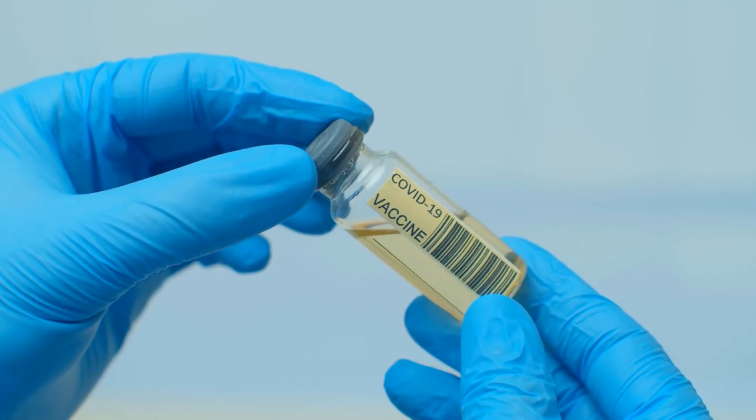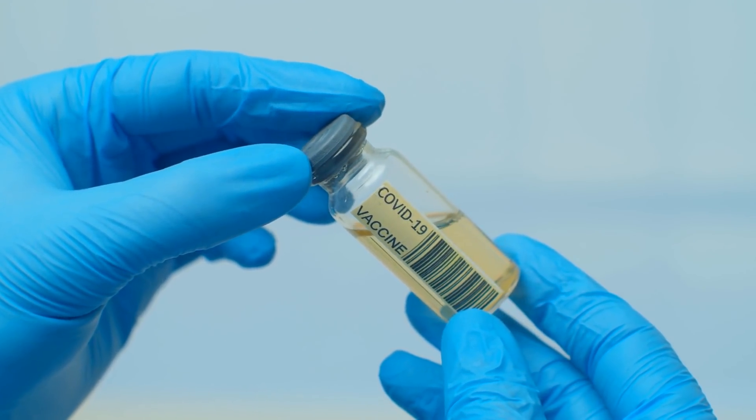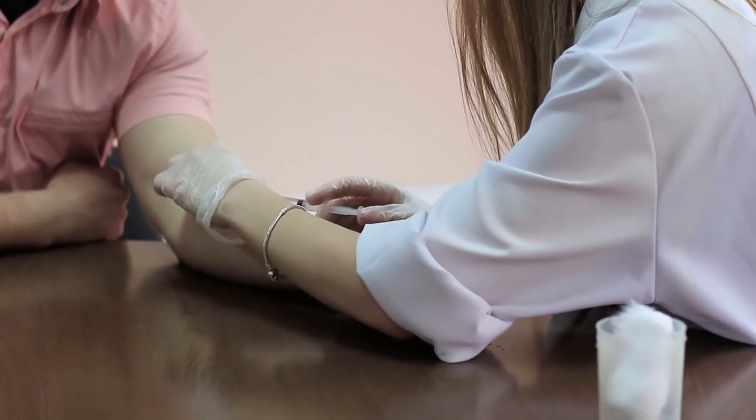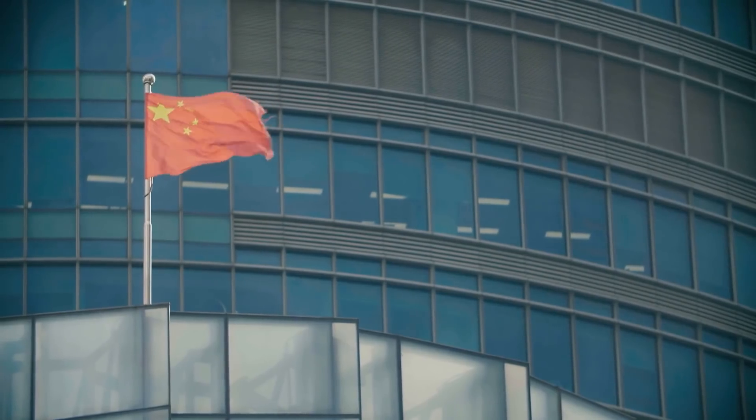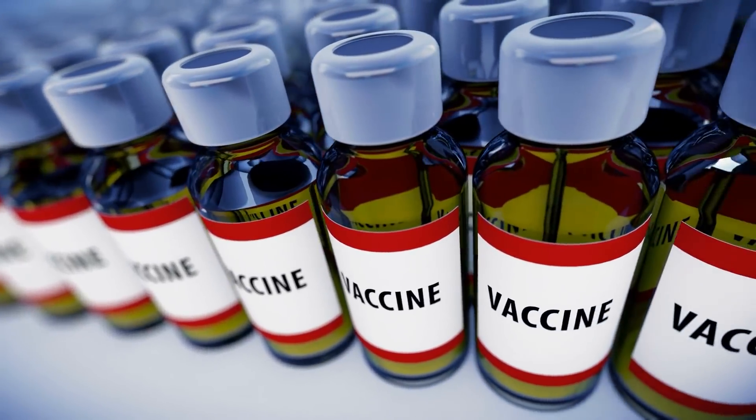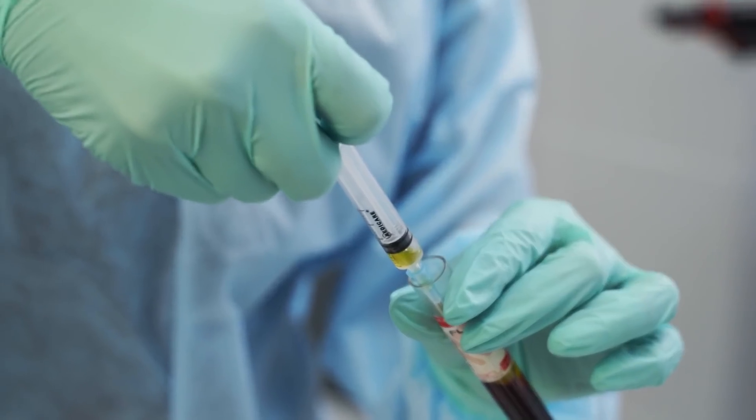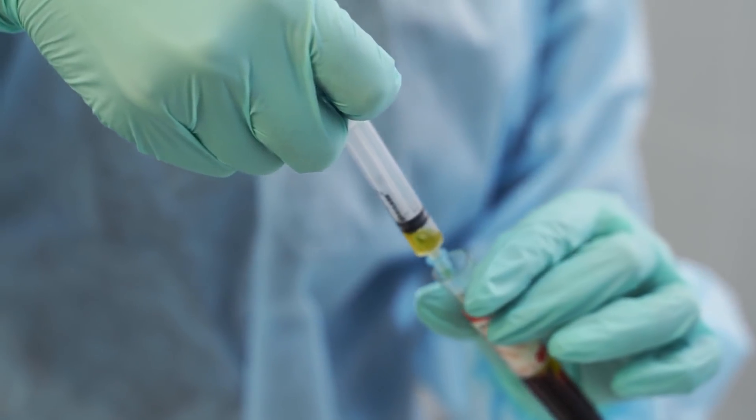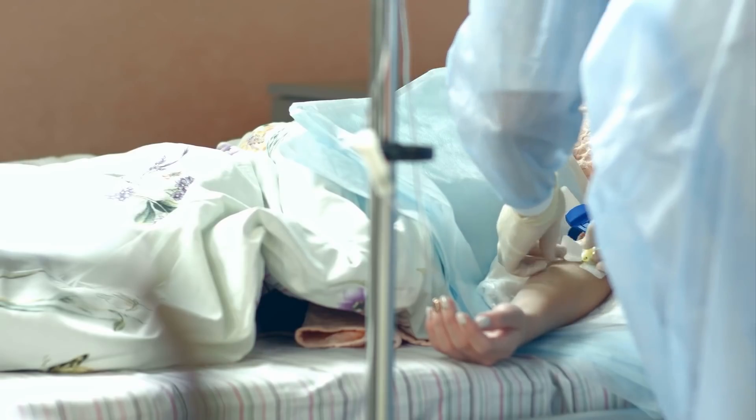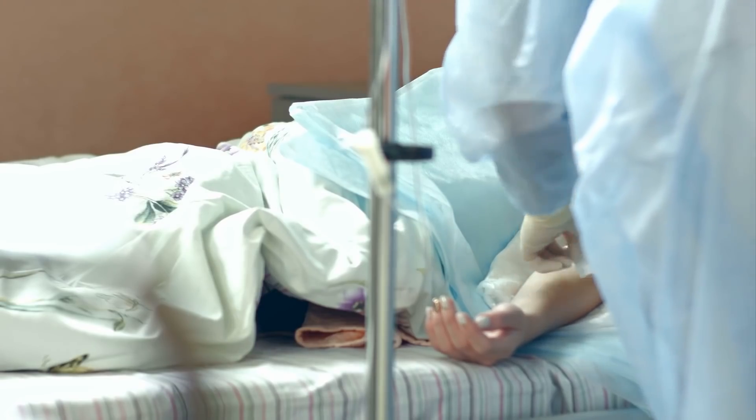Chinese health officials have said that the country currently has five potential coronavirus vaccines at the human trial stage. China's president has even promised to share any vaccine they develop with the rest of the world. Hundreds of patients in China have also received plasma therapy for COVID-19, leading to positive therapeutic results.